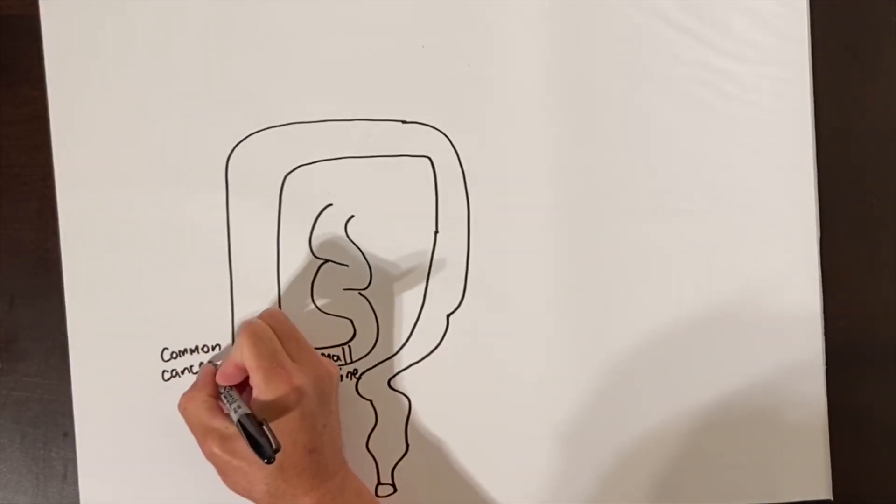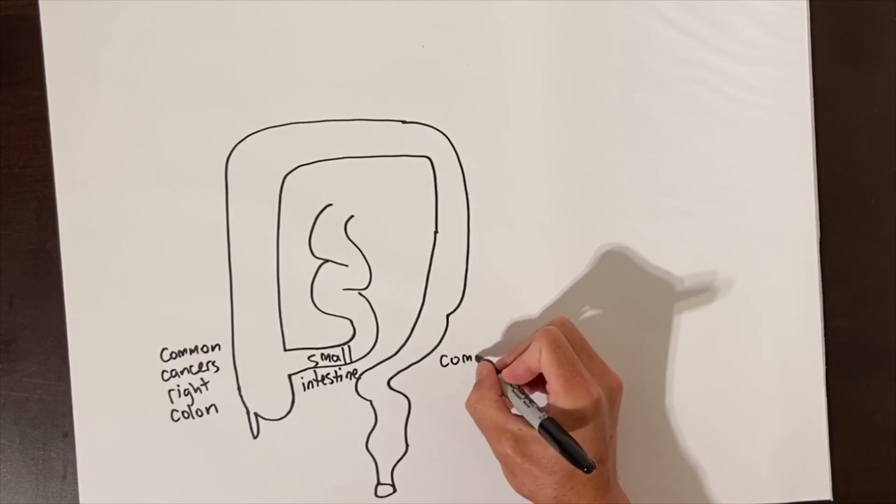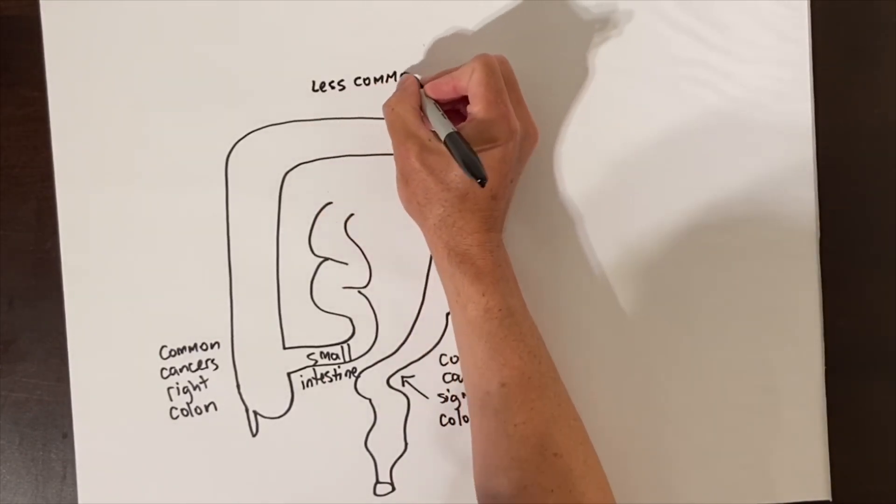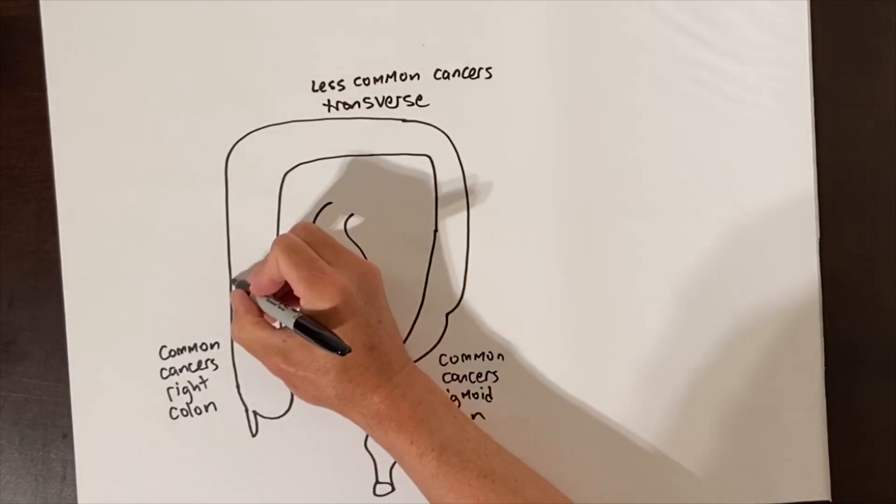Most colon cancers grow in the right side of the colon or the last part of the colon in the C or S-shaped portion called the sigmoid colon. It is less common to get cancer in the middle part called the transverse colon.